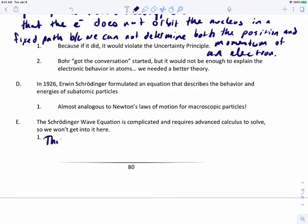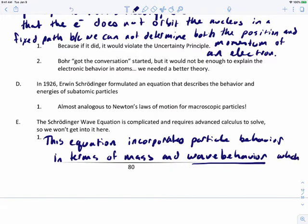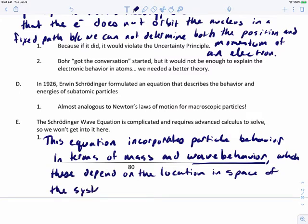This equation incorporates particle behavior in terms of mass and wave behavior, and I'm going to explain that term wave behavior, which these depend on the location in space of the system. Wave behavior: we know that particles travel like waves. When we use the Schrödinger wave equation...